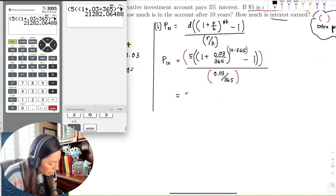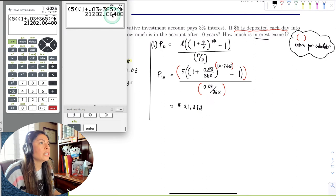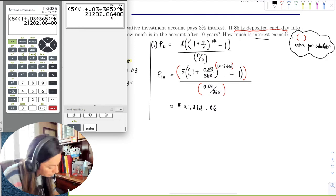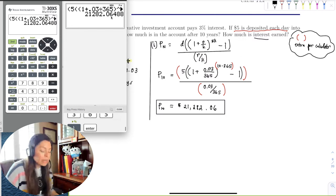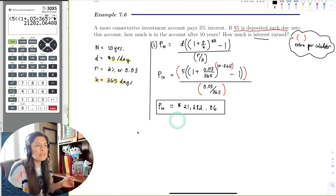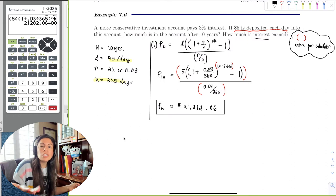So we get after 10 years, 21,282, and let's round to the nearest cent. So 4 is the test digit, which is below 5, so it'll just be 6 cents. So after 10 years of a $5 deposit every day, you'll get $21,282.06. But recall that some of you may say all right, $21,000. No, that's not interest. That's not free money. You put in on that. You put in on that money.